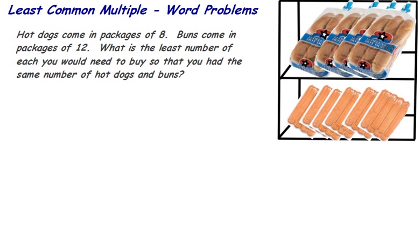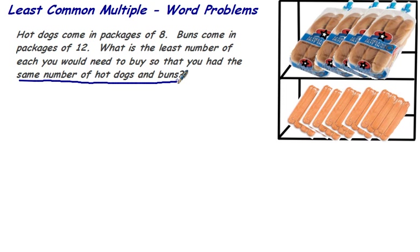Least common multiple word problems. Hot dogs come in packages of 8. Buns come in packages of 12. What is the least number of each you would need to buy so that you have the same number of hot dogs and buns?